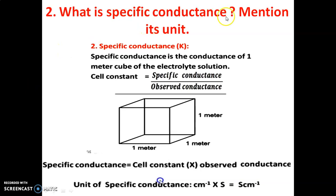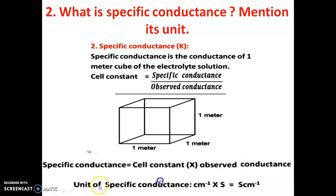Second question: What is specific conductance? Mention its unit. Specific conductance is the conductance observed in 1 meter cube of the electrode solution. It is represented by K (kappa). Cell constant equals specific conductance divided by observed conductance, so specific conductance equals cell constant multiplied by observed conductance. The unit of cell constant is per cm and observed conductance is Siemens, therefore the unit of specific conductance is Siemens per cm.